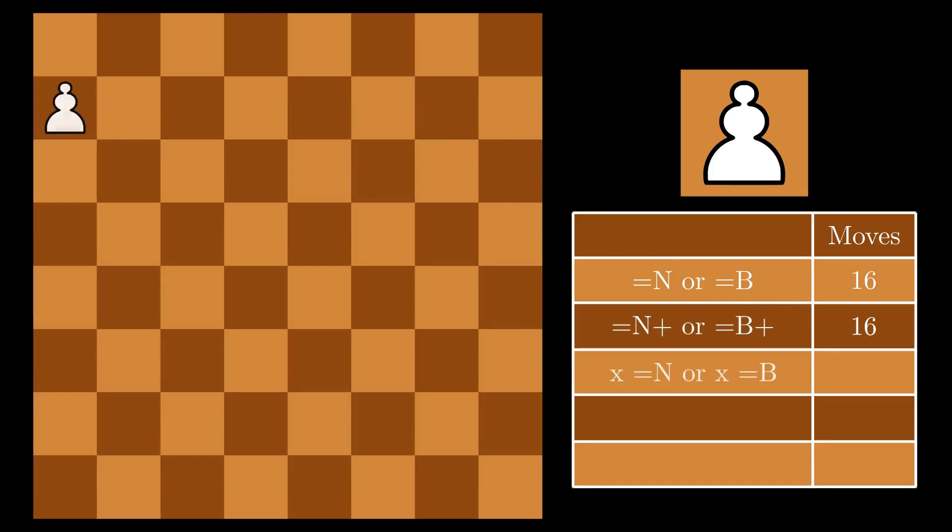Captures is a bit different, since Pawns do so diagonally, meaning once again there are two options from the A file. On B through G files, there are four, until once again just two from the H file. That's 28 possible capture promotions, and conceivably all of these could also occur with check.